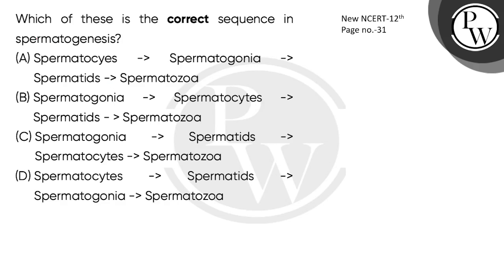Hello, let's read this question: Which of these is the correct sequence in spermatogenesis? Spermatogenesis is sperm formation. Where is it going from? In testes, there are testicular lobules, and per lobule 1-3 seminiferous tubules.